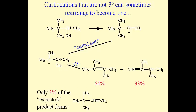We would ordinarily imagine only one possible product, which is the one way down at the bottom. But as it turns out we only get a very small amount of that — about three percent — because what's happening is that we initially make the secondary carbocation, as we would expect, removing the OH and having a positive charge there. But instead of making the expected product, the positive charge relocates itself. One of these methyl groups relocates to an adjacent carbon — that's called a methyl shift.